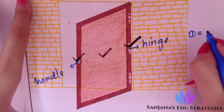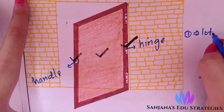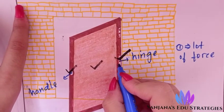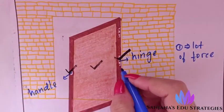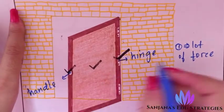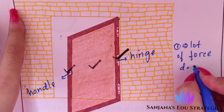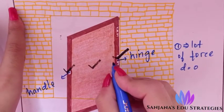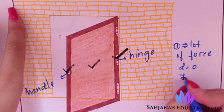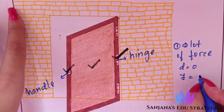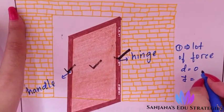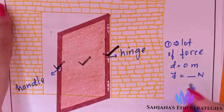When applying force at the hinge, we need a large amount of force to open or shut the door. Even then, we cannot open or shut it, because there is no perpendicular displacement. The perpendicular displacement from the line of action of force is zero.